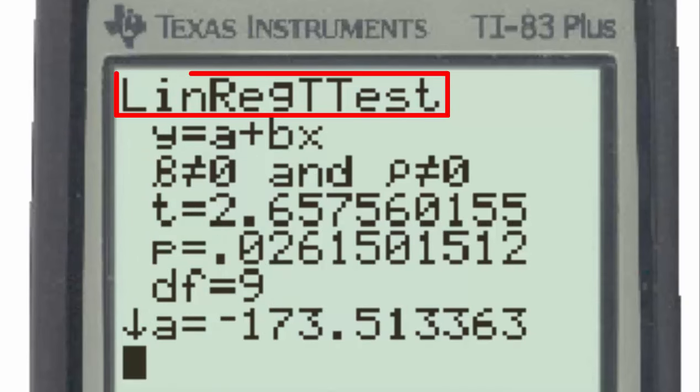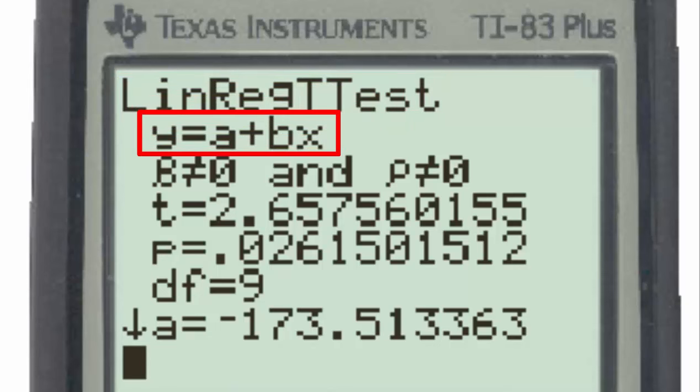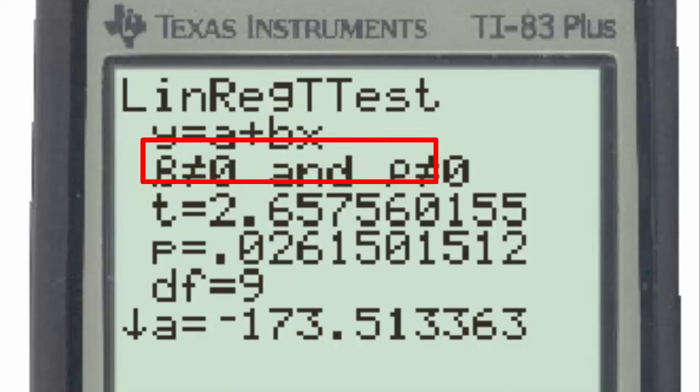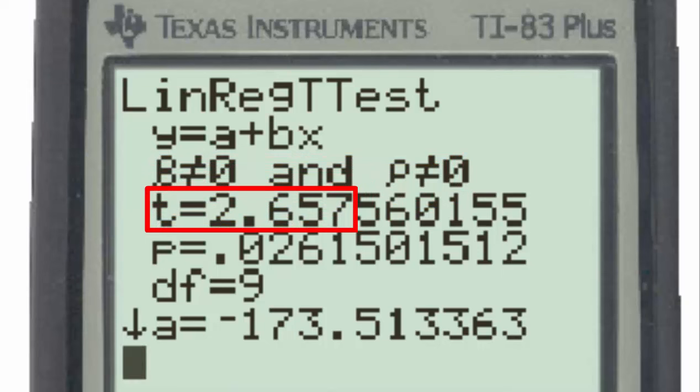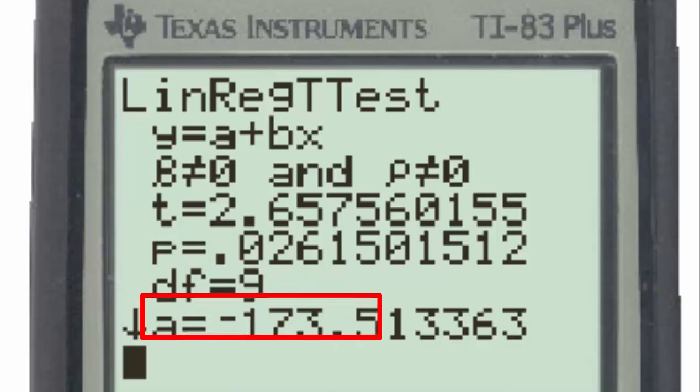Looking at the output for the Linear Regression T-Test, we see first the y equal to a plus bx, which is the equation of the regression line. Beta not equal to 0 and rho not equal to 0 are the alternative hypotheses in this hypothesis test. T equal to 2.66 is the test statistic for this linear regression t-test. P equal to 0.026 is the p-value, and we see that the degrees of freedom are equal to 9.